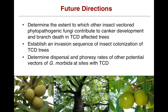Questions that remain for us are to determine the extent to which other insect-vectored phytopathogenic fungi contribute to canker development and branch death in TCD-affected areas, and to establish an invasion sequence of those insects that colonize TCD trees, especially with regard to these ambrosia beetles. We want to determine the sequence at which these trees are attacked — do the ambrosia beetles arrive first, weakening the trees to the point that walnut twig beetle colonizes them?